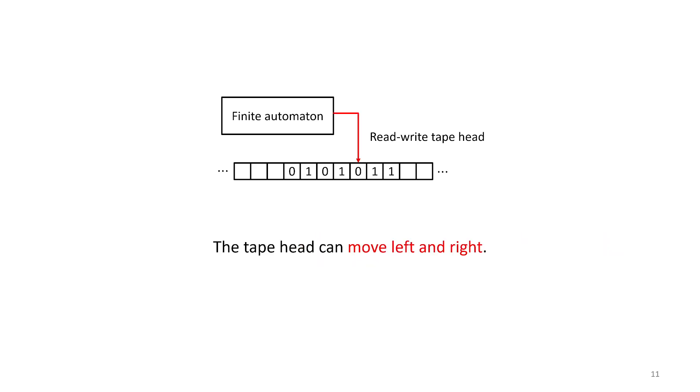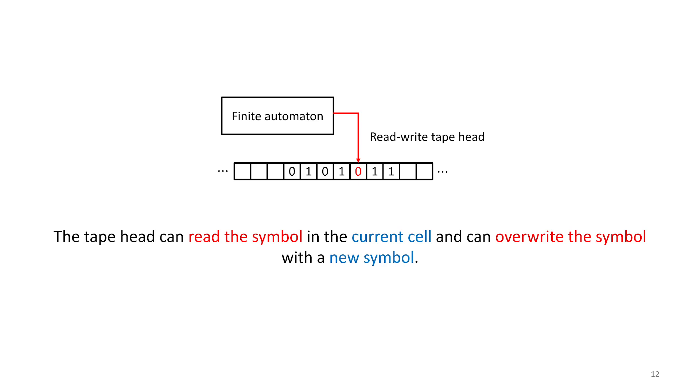As I mentioned, the tape head can move itself back and forth left and right. So it can traverse over the tape and read all the different cells. While it's moving back and forth, it can read the current symbol of the cell and then it can overwrite it with another symbol. And that's how we're going to do a lot of our processing.